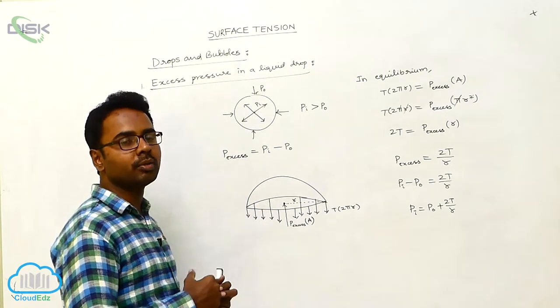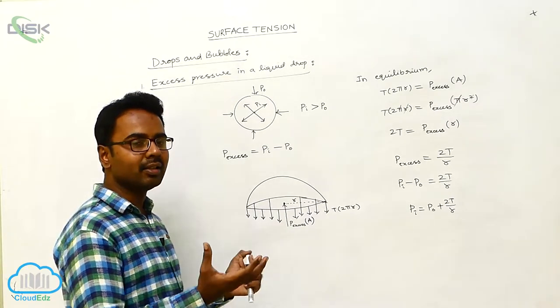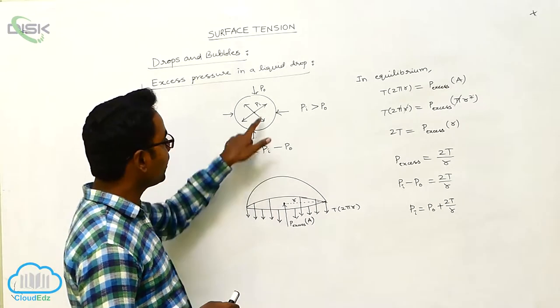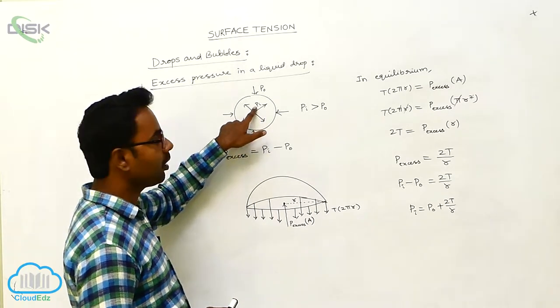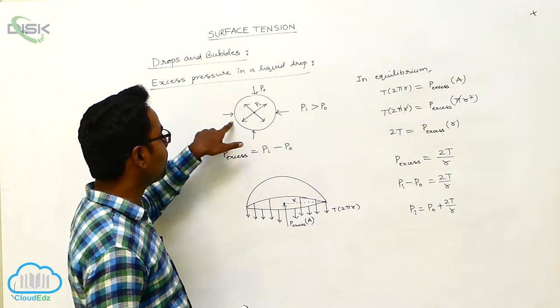Now liquid drop is retaining in the spherical shape, which means the pressure inside the liquid drop is excess than the pressure acting on it in all directions. Now this is a liquid drop. Inside the liquid drop, suppose the pressure is Pi and all over the atmosphere pressure P0 is acting.